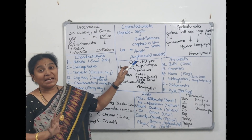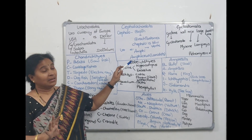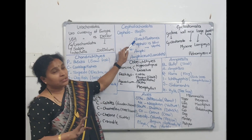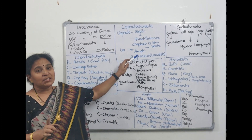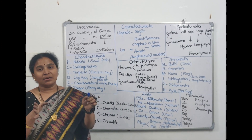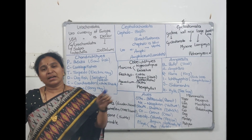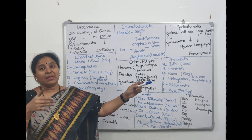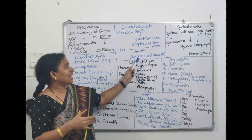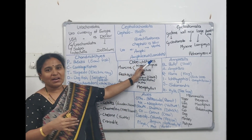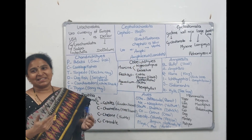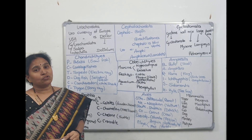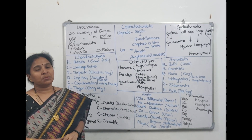Now coming to Cephalochordata. Cephalic means head, then brain — so brain should take you to Branchiostoma. And Cephalochordata is between Urochordata and Vertebrata. 'Between' means Amphi — Amphi means Amphioxus, also called lancelets. That's it for Cephalochordata.